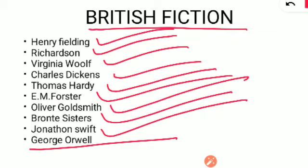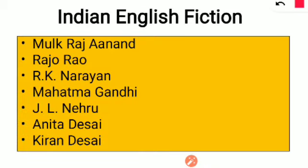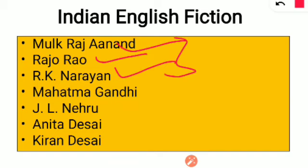The next topic is Indian English Fiction. The important writers are Mulk Raj Anand, Raja Rao, and R.K. Narayan — these three are considered the three pillars of the Indian English novel and are very important. Then also prepare Mahatma Gandhi, Jawaharlal Nehru, and Anita Desai.